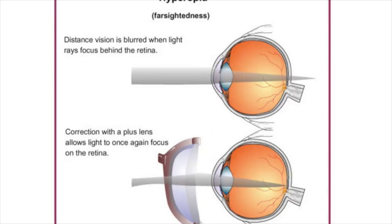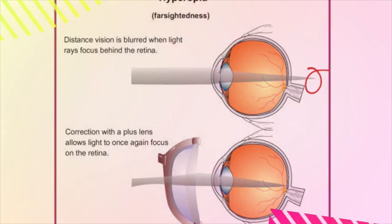A person with hyperopia can see objects far away but has difficulties with objects nearby. This occurs when the cornea and lens are too weak or if the retina is too small. The incident light rays converge behind the retina and do not produce a clear image. A converging lens fixes this issue. Incident light rays will converge towards the focal point before entering the eye, compensating for the weak cornea and lens convergence, so the light ends up focusing onto the retina.